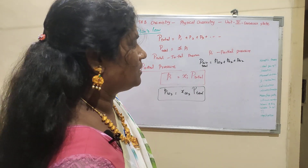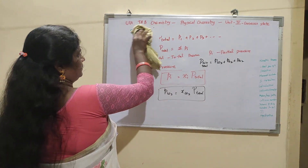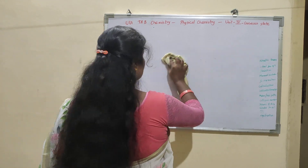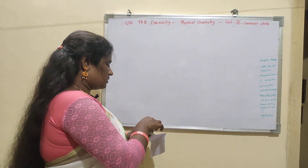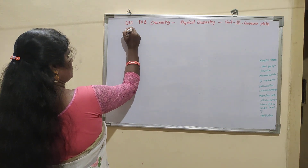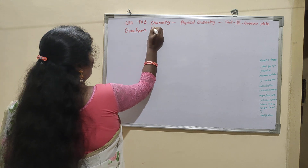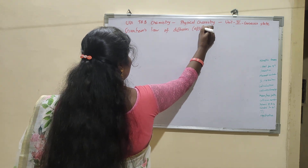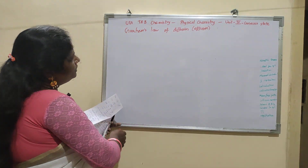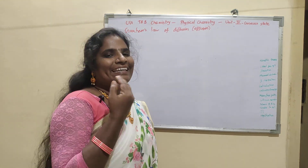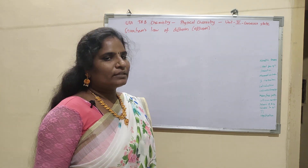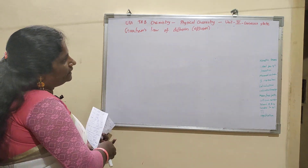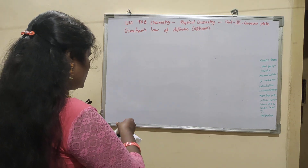Next, moving on to Graham's law. Graham's law of diffusion or effusion. In the liquid it means diffusion. The rate of diffusion of a given gas is inversely proportional to the square root of its density. The rate of diffusion is inversely proportional to the square root of the density.